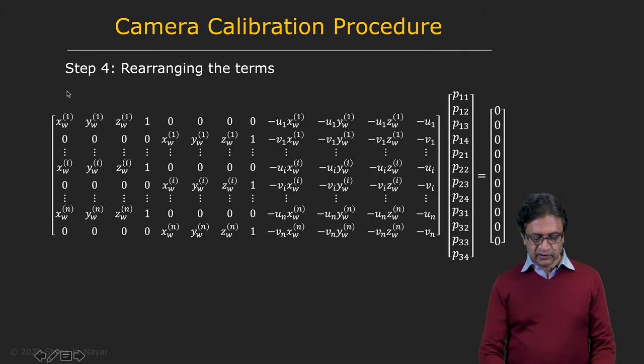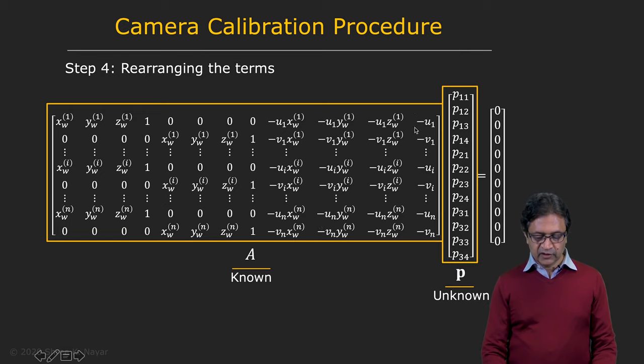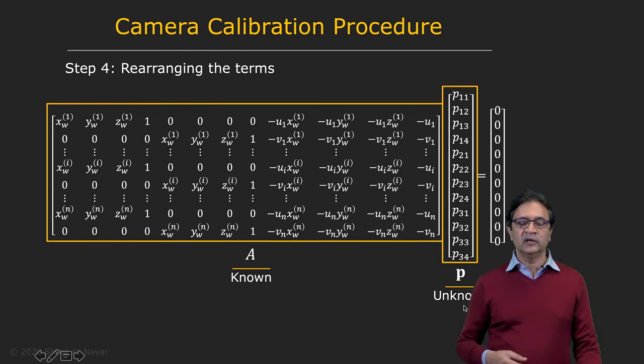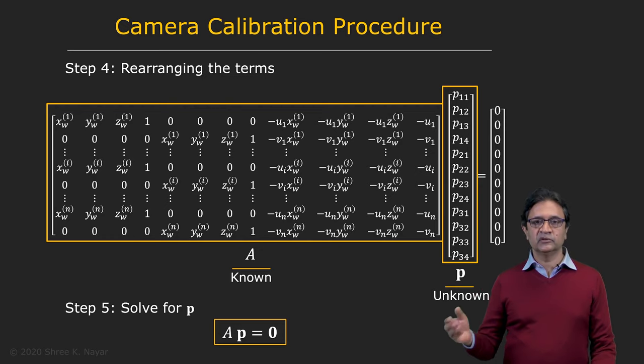You have a single matrix where everything is known to us. We call that matrix A. And you write your projection matrix in terms of a vector here with 12 elements. And that's what's unknown. So we have the simple form, which is A*P equal to zero.